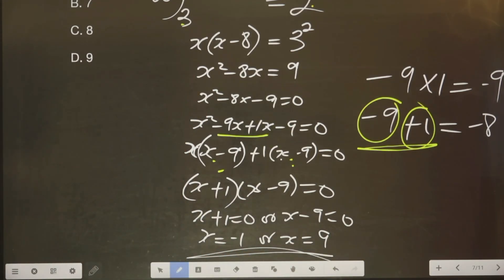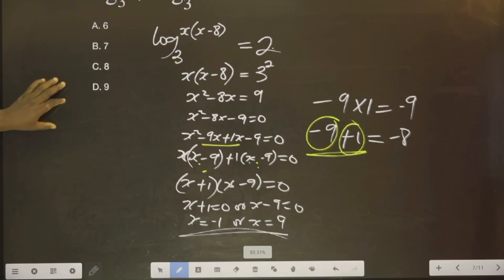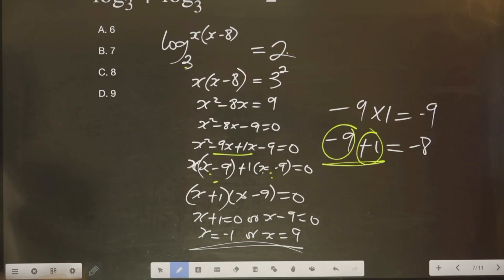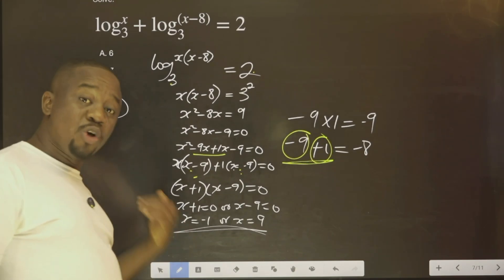So, we have two answers: minus 1 and 9. But it's only this one that is given to us. We just select that. That is D. Because it's one of the answers.